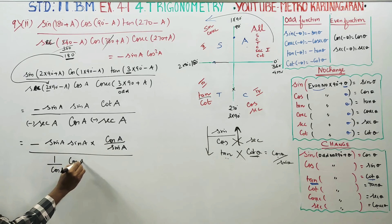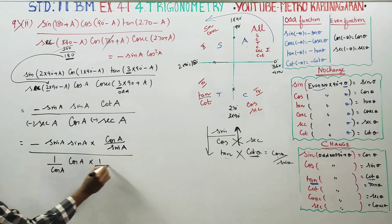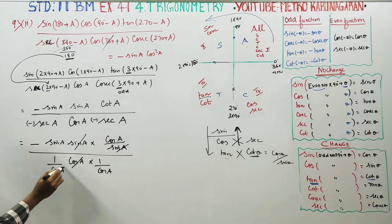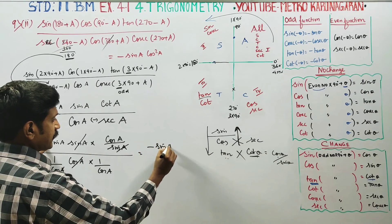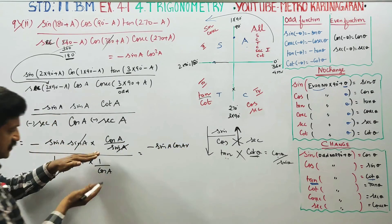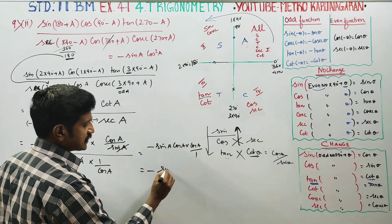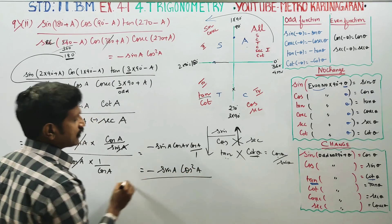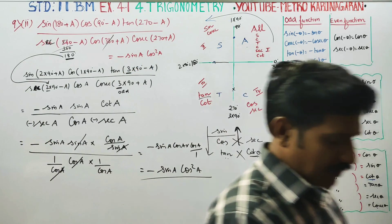This is cos. This minus is 1 minus. Secant enter 1 by cos. 1 sin, 1 sin cancel. 1 cos, 1 cos cancel. Balance is minus sin A. This is cos A. This is reciprocal. This is cos A by 1. Now, minus sin A, cos A into cos A, cos square A. This is minus sin A, cos square A. Hence, prove. Thank you.